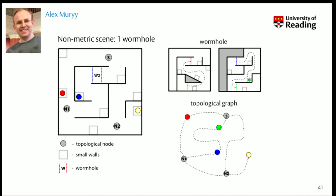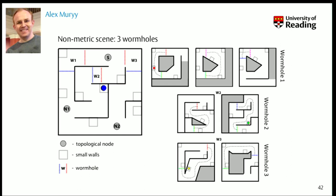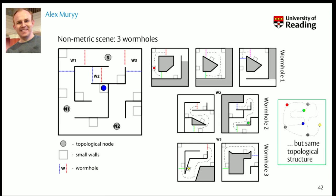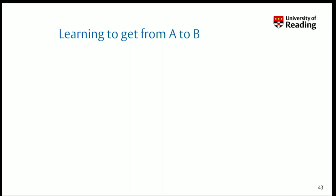This is one of the wormholes: when they go in, the scene changes like that, then like that. The green target, which is always in the same topological position, is hidden inside this wormhole. There are three wormholes: the first has the red target, the second has the green target, the third has the yellow target. This is quite difficult for participants to get their head around, but they all have the same topological structure.